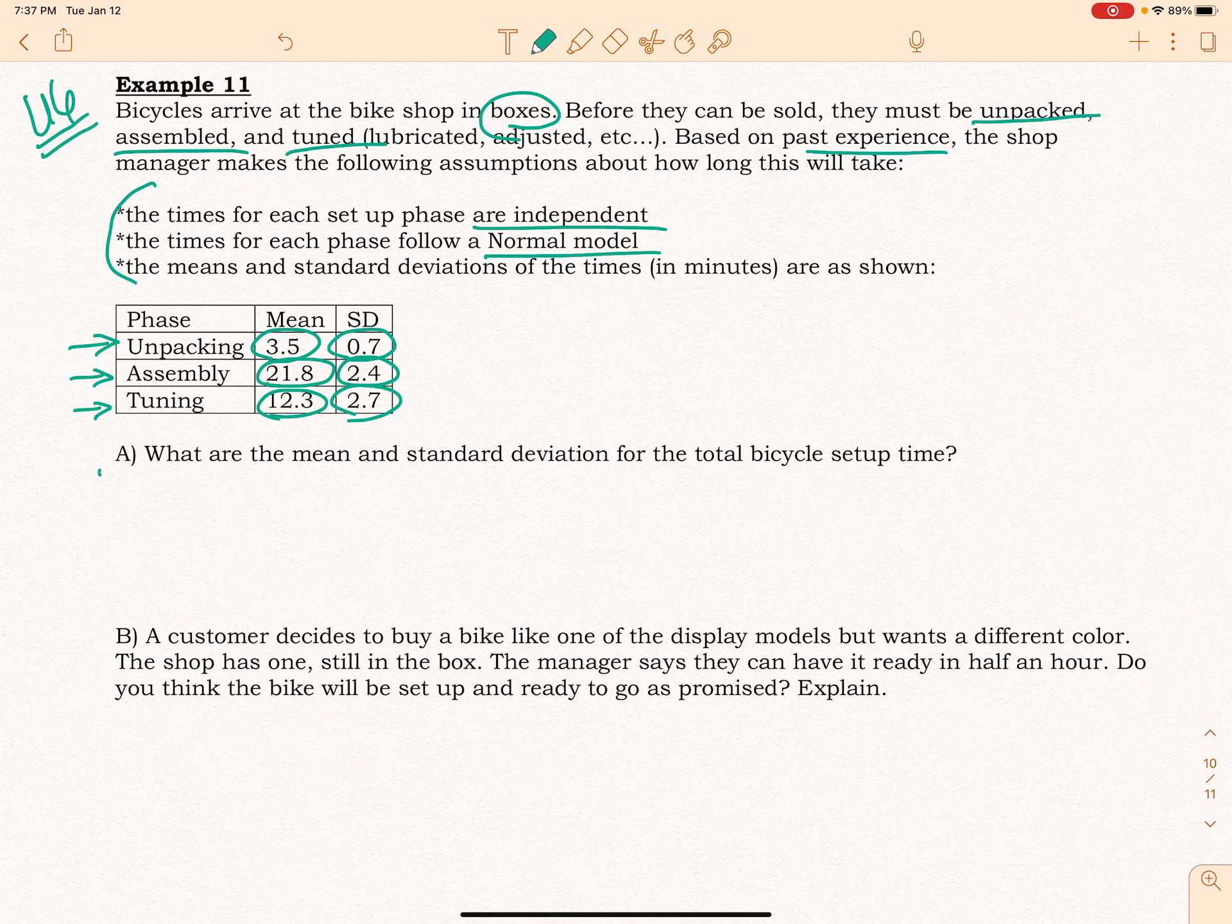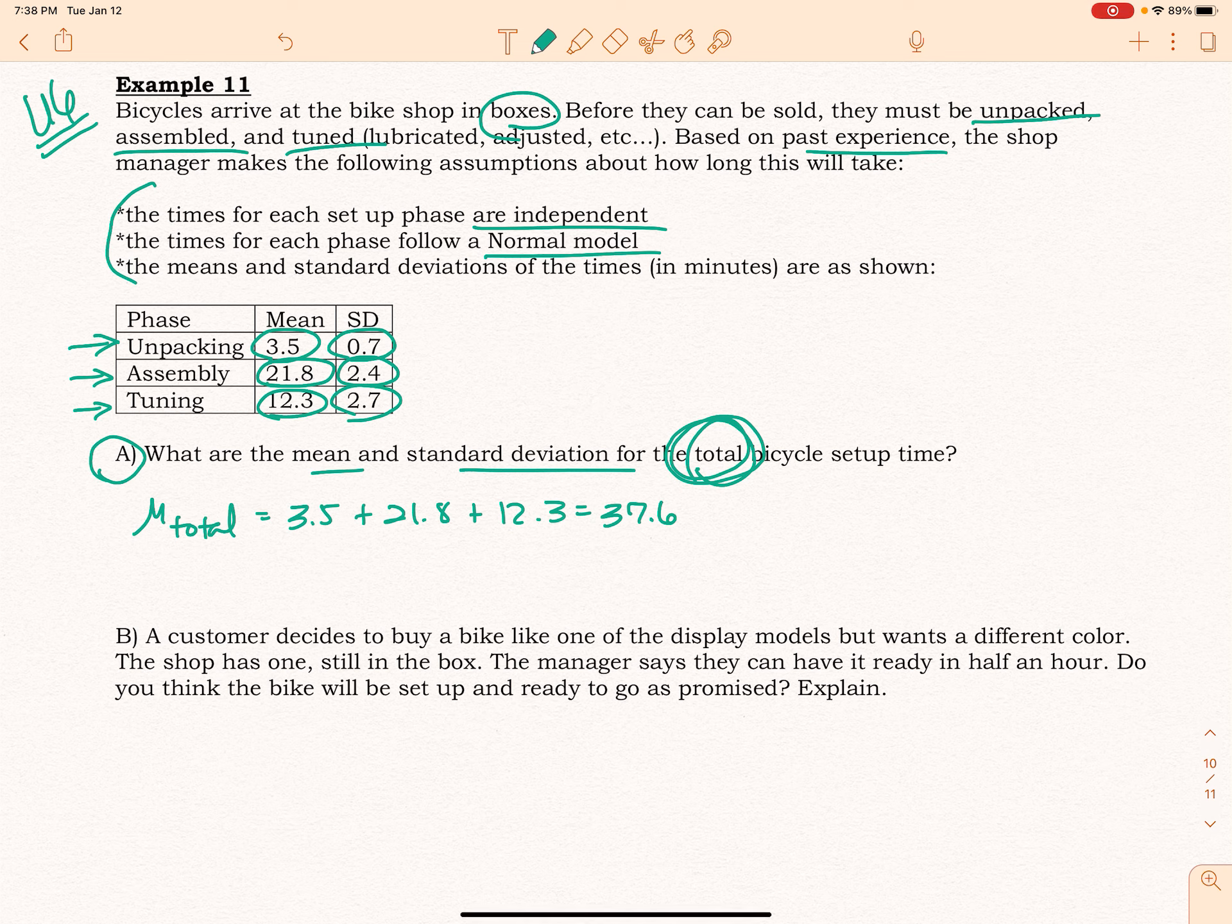For Part A, what are the mean and standard deviation for the total bicycle setup time? The total average is 3.5 plus 21.8 plus 12.3. Addition is a beautiful thing.